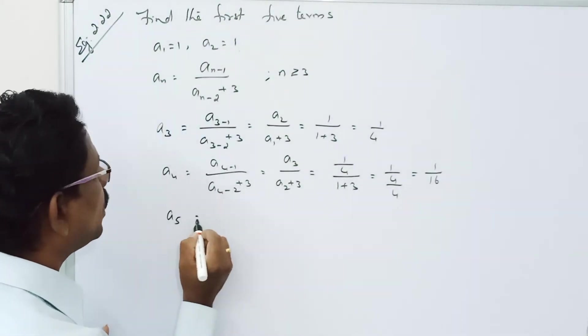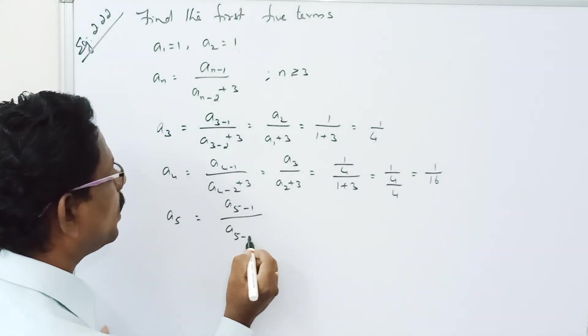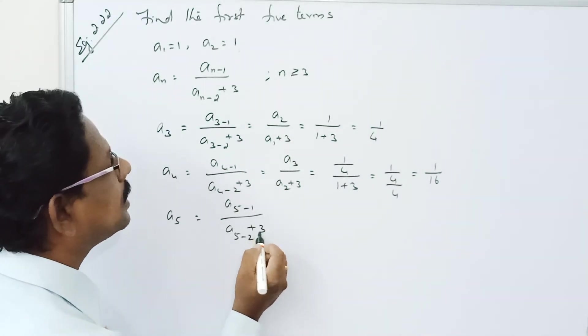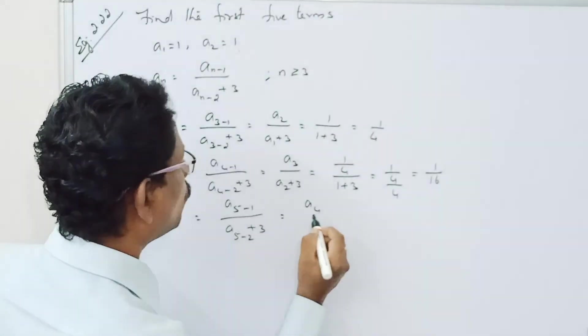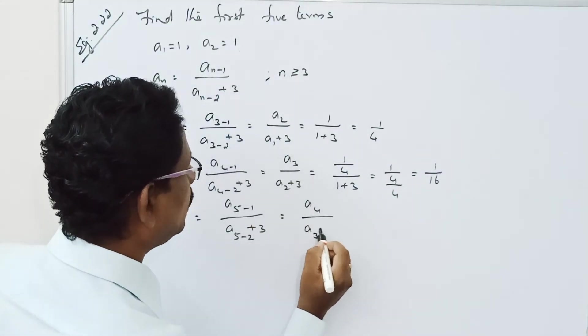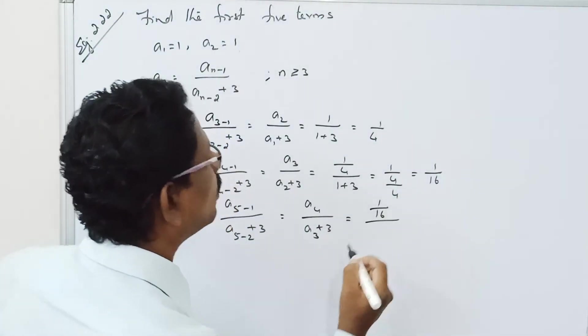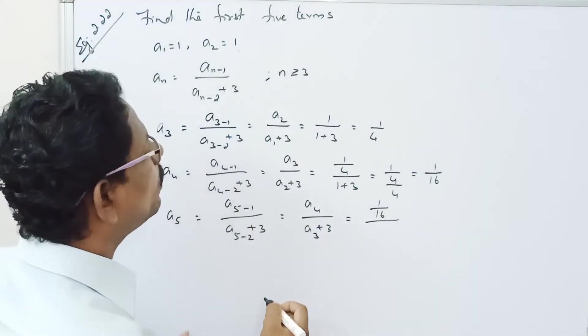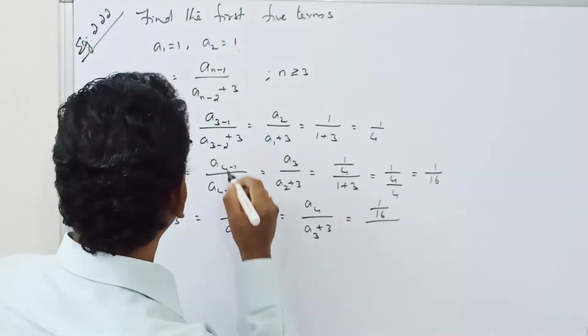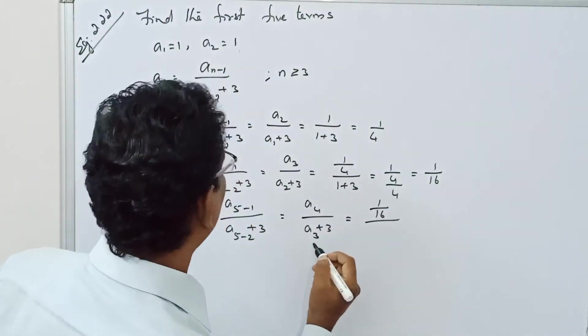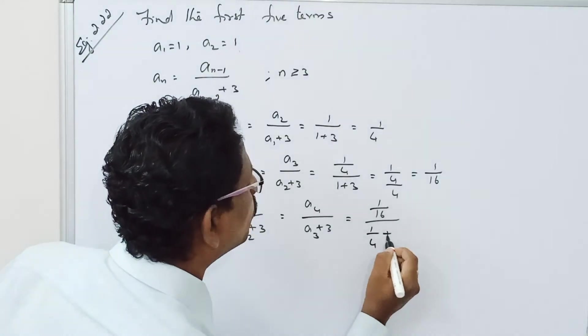A5 is equal to A5 minus 1 by A5 minus 2 plus 3. That is, A4 by A3 plus 3. A4 equal to 1 by 16.